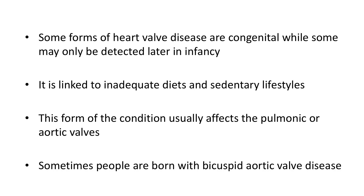Some forms of heart valve disease are congenital, while others may only be detected later in infancy. Other forms can develop during a person's lifetime; however, the cause is still unknown but is definitely linked to inadequate diets and sedentary lifestyles. This form usually affects pulmonic or aortic valves, sometimes with defective leaflets that are deformed, incorrect size, or not attached properly. Sometimes people are born with bicuspid aortic valve disease, where there are only two leaflets instead of the normal three, often causing the valve not to open or close properly.